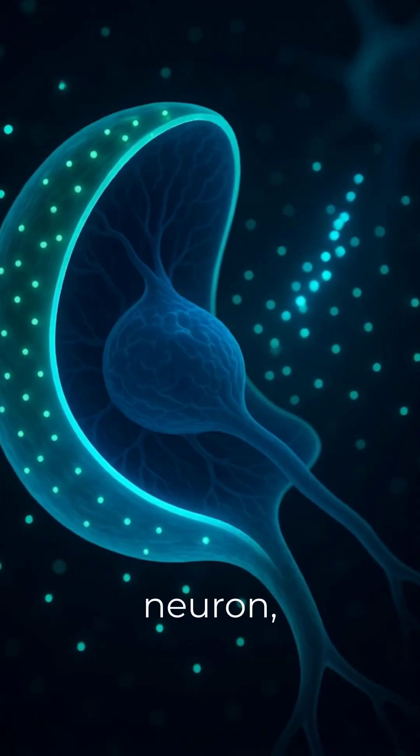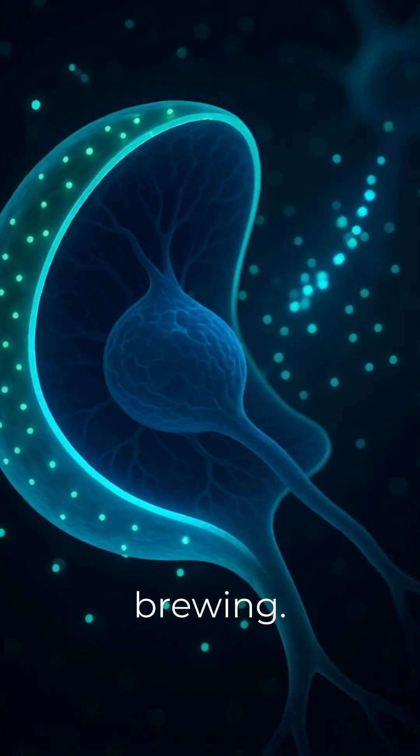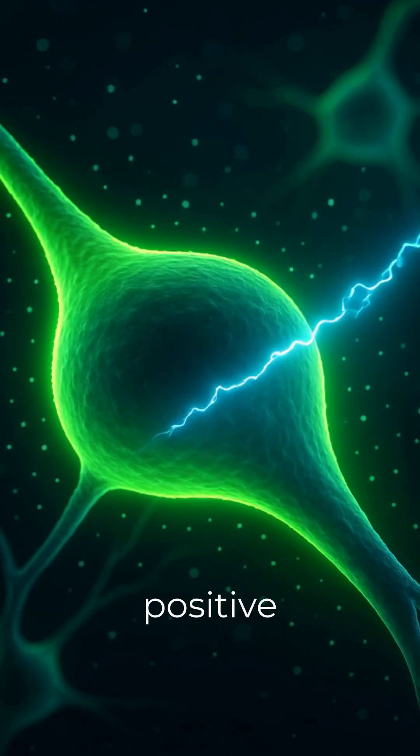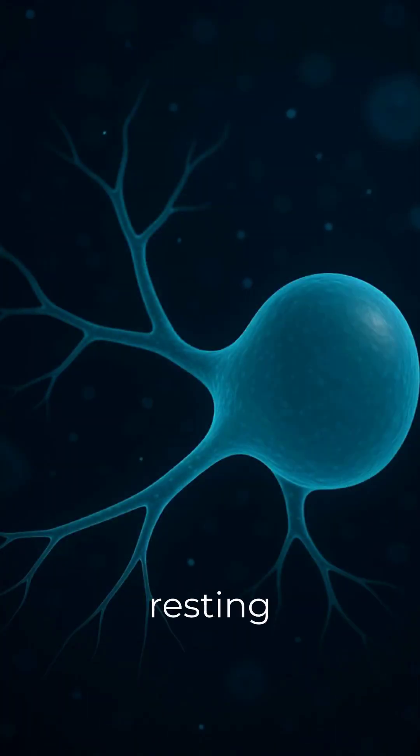Inside this neuron, a tiny electrical storm is brewing. At rest, it's calm. Negative inside, positive outside. That's the resting potential.